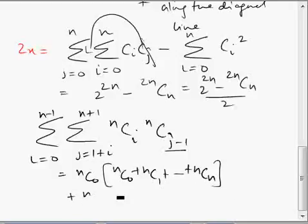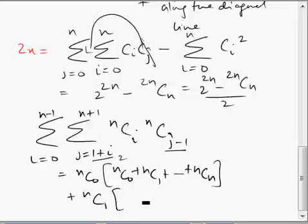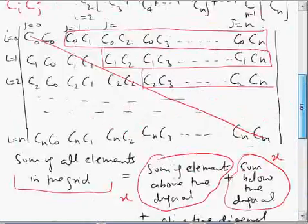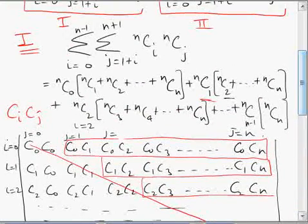When i equals 1, j starts from 2. The first term is again 1 — nC1, nC2 and goes on. So if you try to find these terms in the same two-dimensional grid, let me show with blue.